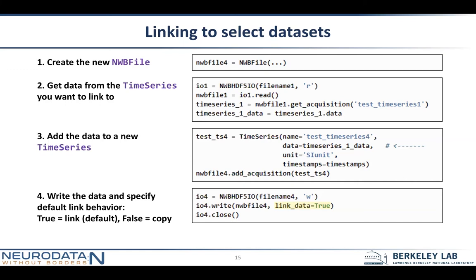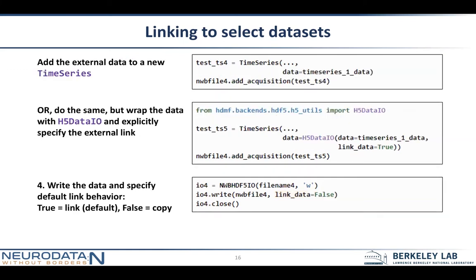Sometimes you don't want that global effect, so there's another way around that. We have this H5DataIO object, which is what you can use to wrap your data sets. Instead of the previous example where we passed in our H5Py data set object — if we just want to selectively link to it, we can wrap it with this H5DataIO object. One of the arguments to H5DataIO is link_data equals true, and then of course the data. When you end up calling the write method, you have to set link_data to false just to turn off global linking.